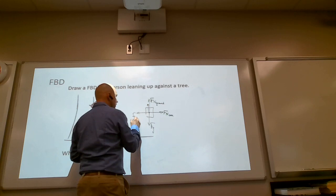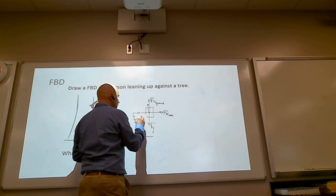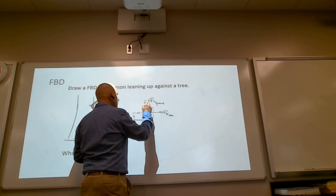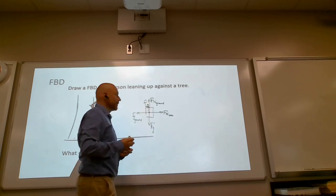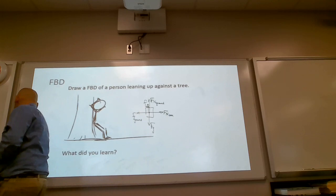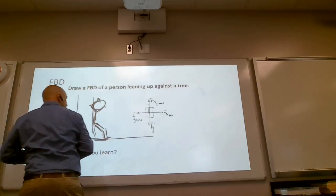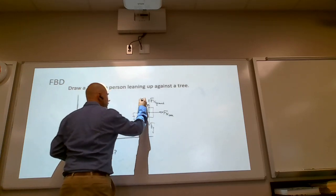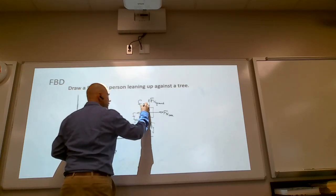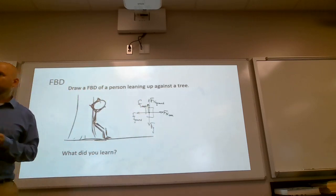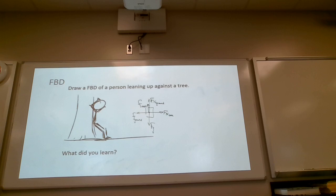Here, you have friction from the ground. And this would be friction from the tree. So what this shows us is you can have more than one force going in the same direction. That's not illegal.